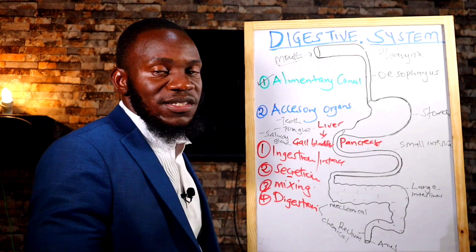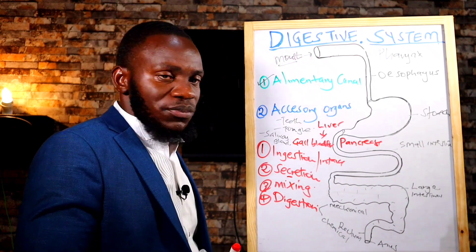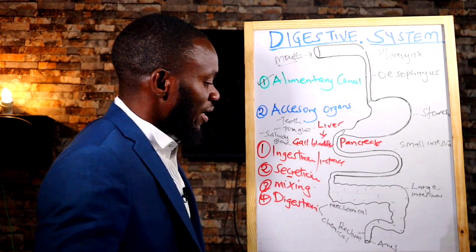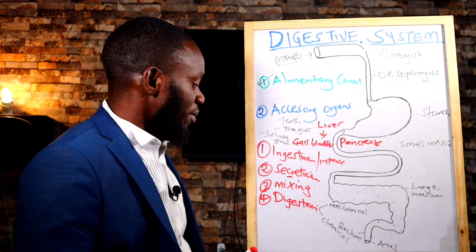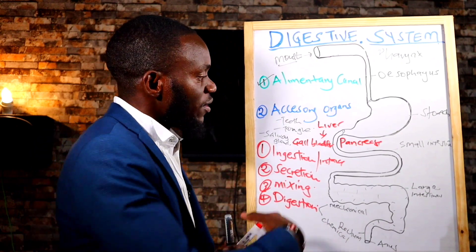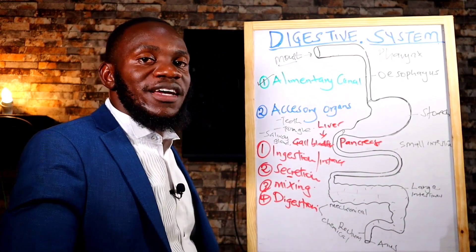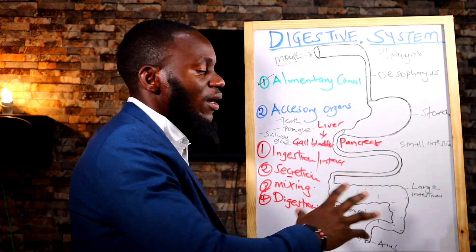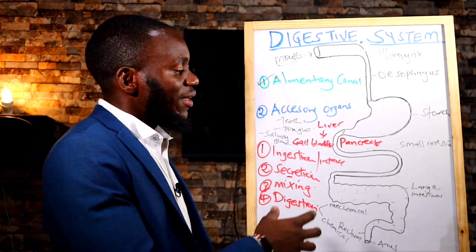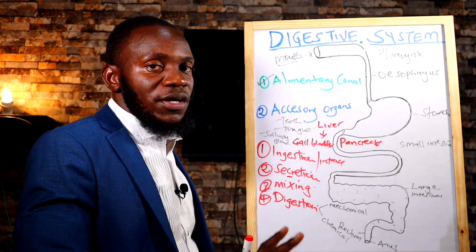In the large intestines, there is minimal absorption — for example, water and other nutrients. Food particles that were not absorbed in the small intestines will be absorbed in the large intestines. Chemical digestion involves enzymes and hydrochloric acid in the stomach. Once you break nutrients down into their smallest form, you can absorb them into the bloodstream to be supplied all over the body and to tissues.